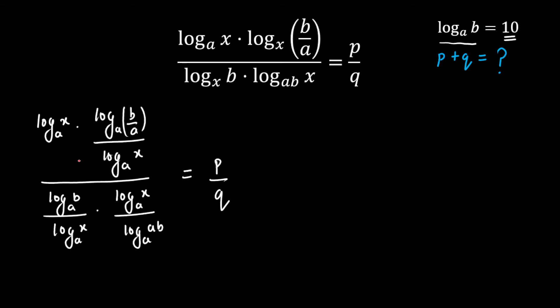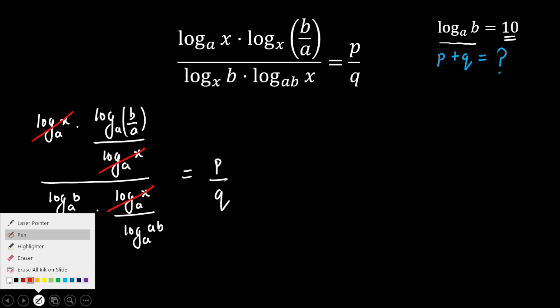Now something will cancel out. To show you here, log x to the base a will easily cancel out. Similarly in denominator these two will cancel out. Now the rest of the terms I'm writing here.